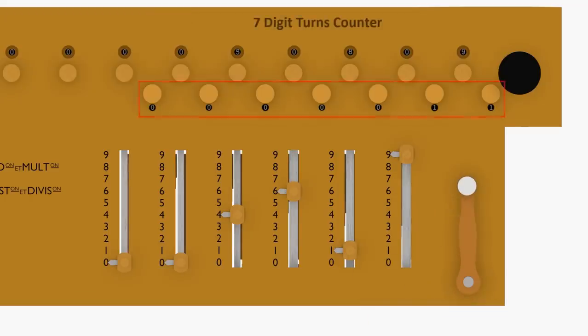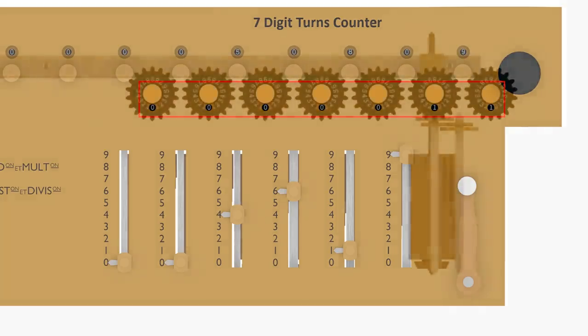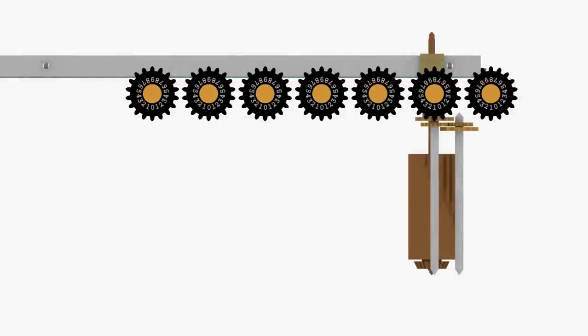The carriage contains a 7 digit counter that records the number of turns performed during rapid multiplication and division. Because it is never necessary to turn the crank more than 9 times for any column, no carry mechanisms are needed in the counter, greatly simplifying its design.